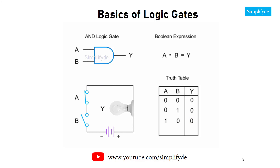It is only when both A and B are closed, or high, with corresponding 1s indicated in the truth table, does the Y output equal 1, or high, and the lightbulb turns on. Thus, in an AND logic gate, the output is high only when all inputs are high.